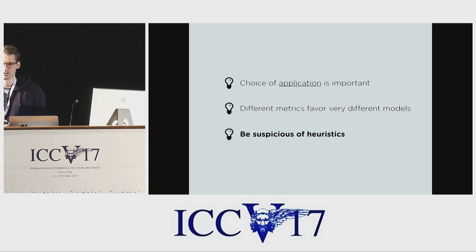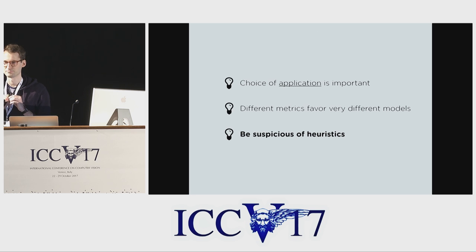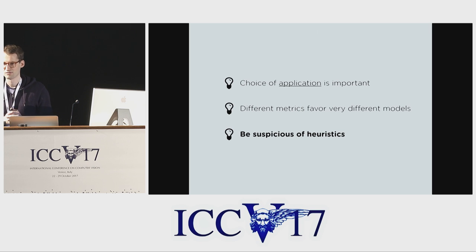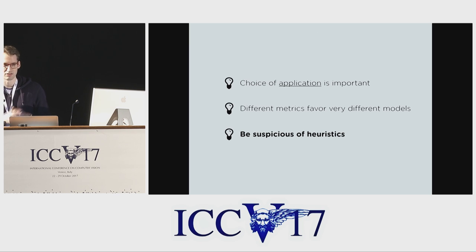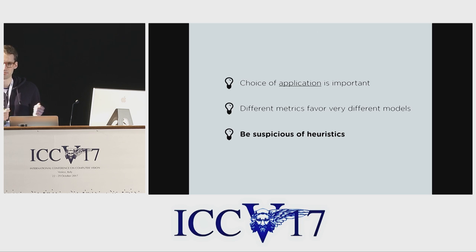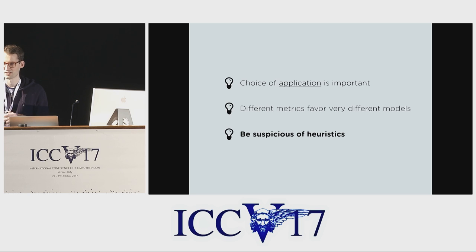At least when it comes to evaluation, we really have to know what we want and choose the right tool for the job. My third take-home message is: be suspicious of heuristics. Because we like the separation between generative modeling and applications, we sometimes try to come up with some general heuristic that captures the overall performance of a generative model. This is problematic for several reasons. There really is no single metric which can capture the performance of a generative model because different applications behave so differently. And these heuristics are often based on intuitions which hold in low dimensions but can fail in high dimensions, making it often possible to cheat them.